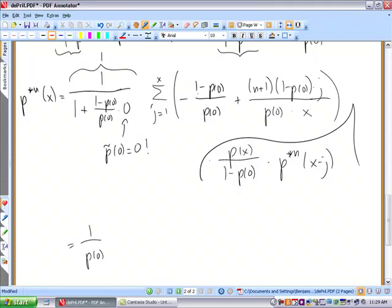Then you have one minus p of zero here and here, and then you divide by one minus p of zero. So this actually cancels in the sum.